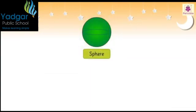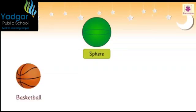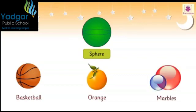This is a sphere. A basketball, an orange, and marbles are examples of a sphere.